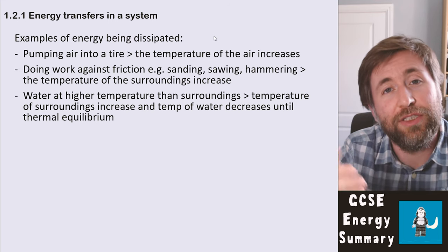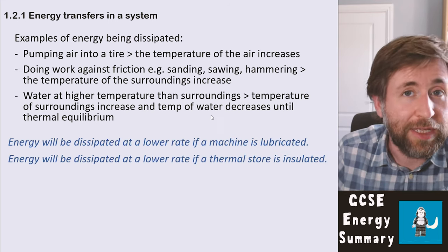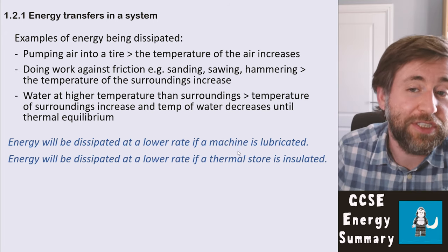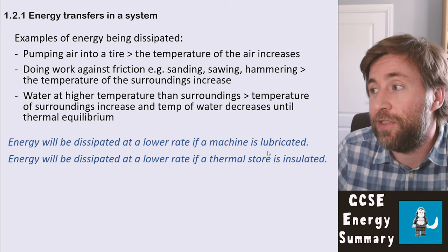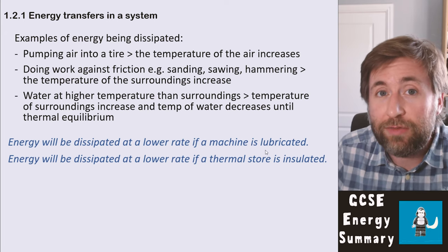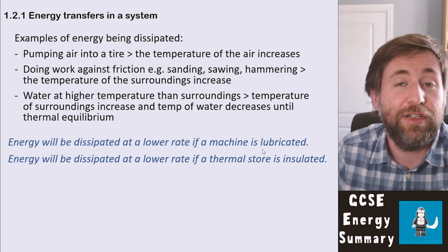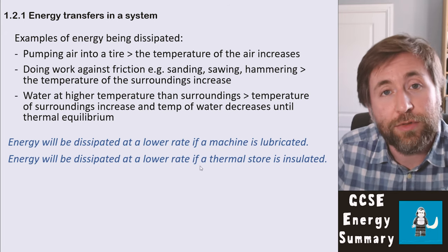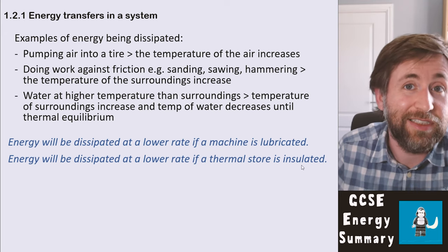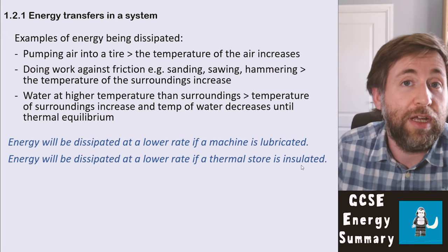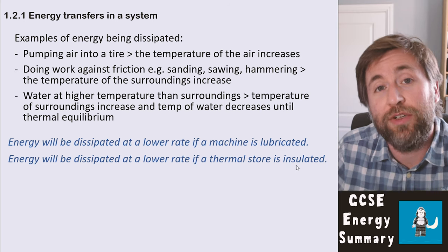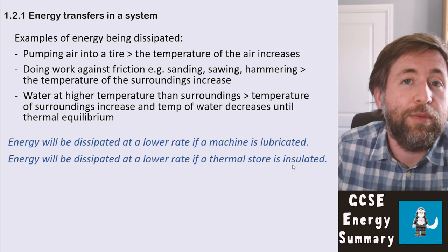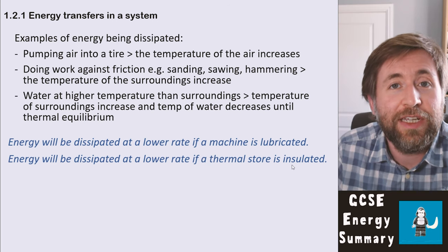There are ways to limit the rate at which heat is dissipated. Energy will be dissipated at a lower rate if a machine is lubricated — using oil, graphite, or water to reduce friction between the parts. Energy will also be dissipated at a lower rate if a thermal store is insulated. For example, if you use an insulated mug, your tea will cool at a lower rate and energy will be transferred less rapidly to the surroundings.